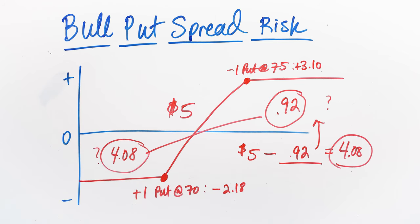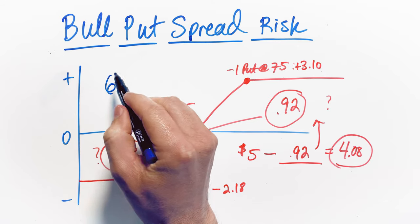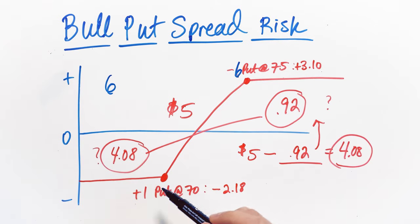Again, it's really important that we understand how much risk we're taking on just one simple spread like this because if we end up trading more contracts, let's say we're trading six of these bull put spreads where instead of selling one, we sell six and instead of buying one, we buy six here. We're doing a lot of different contracts.